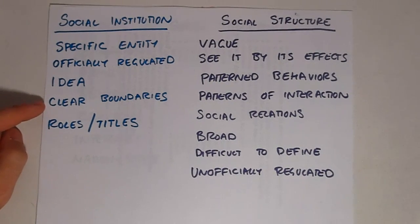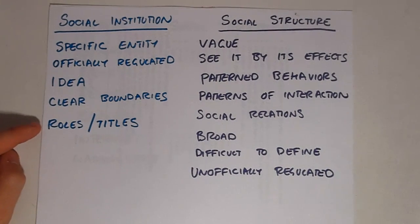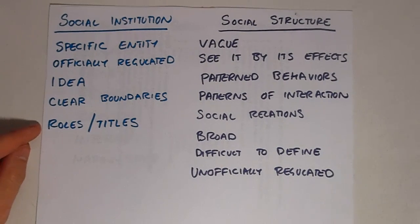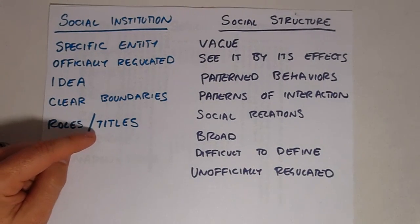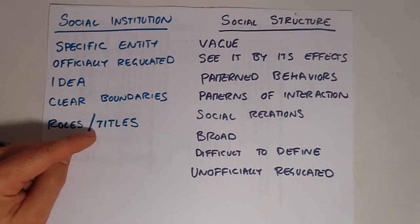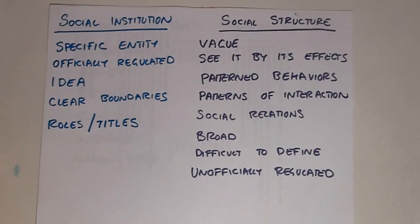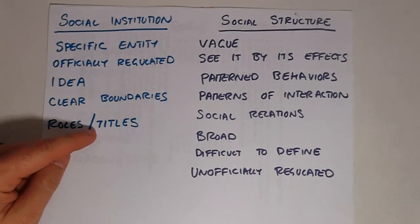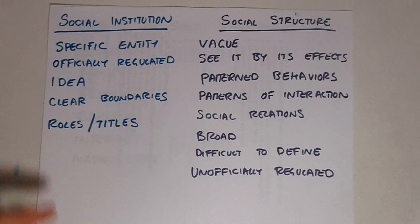Social institutions have clear boundaries — you know when you're in one, and you know when you're out of it. Within a social institution there are roles that are officially recognized and usually carry with them official titles, such as student, professor, priest, or CEO. Often there are very rigorous or high standards for obtaining the title and fulfilling the role.